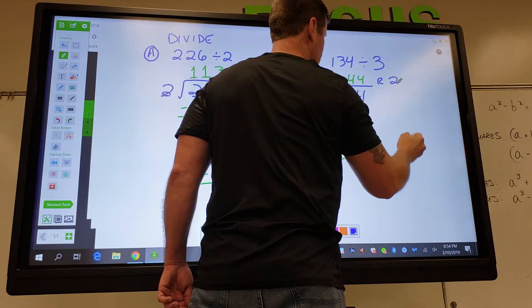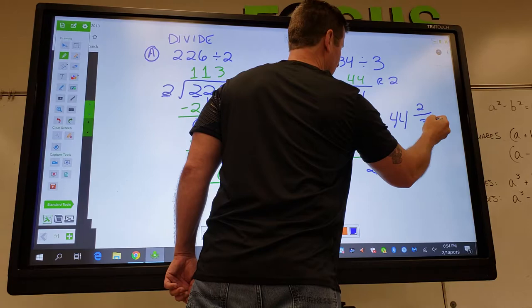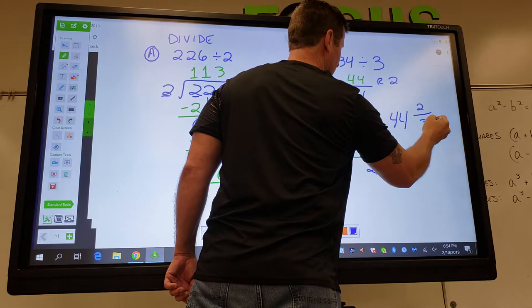Now some teachers may have taught you to put the R2 here. Okay, that's no Star Wars reference. Here, I'm going to tell you to put 44 and then with the 2 as a numerator and 3 as your divisor, which represents the remainder, 2 out of 3. And that my friends is just a quick review on how to use numerical long division.